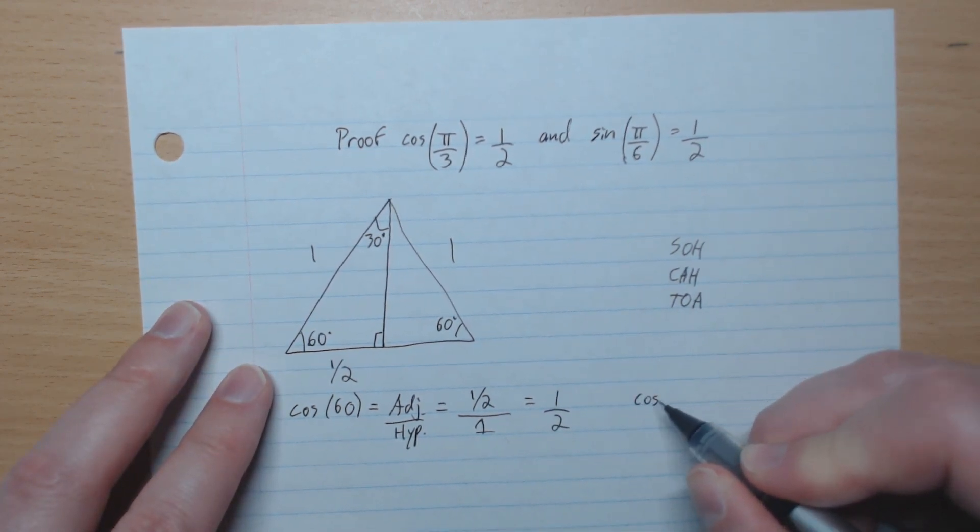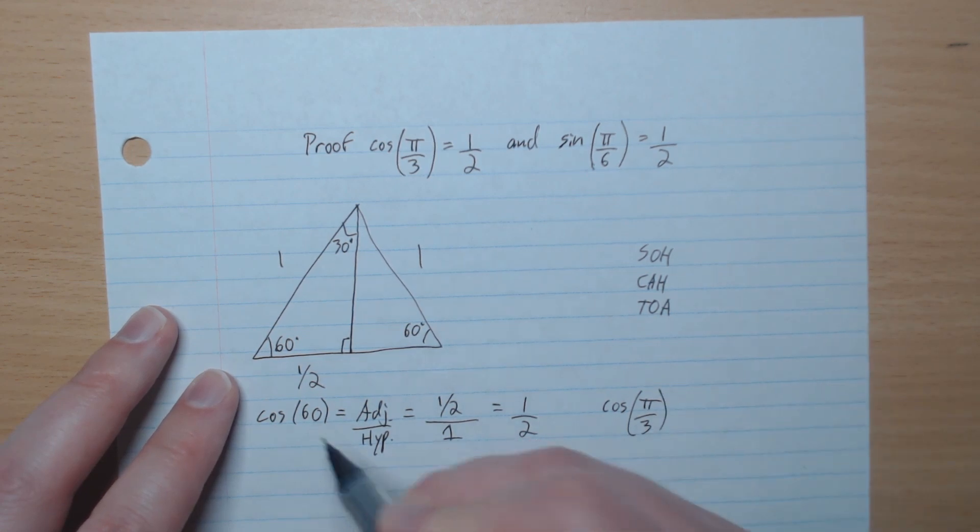So here we have cos of pi over 3, which is 60 degrees, is a half.